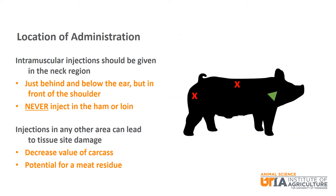Intramuscular injections should be given in the neck region just behind and below the ear but in front of the shoulder. You should never inject into the ham or the loin. This can lead to tissue site damage which is cut away during the harvesting process, decreasing the value of the carcass and increasing the potential for a drug residue in the meat.